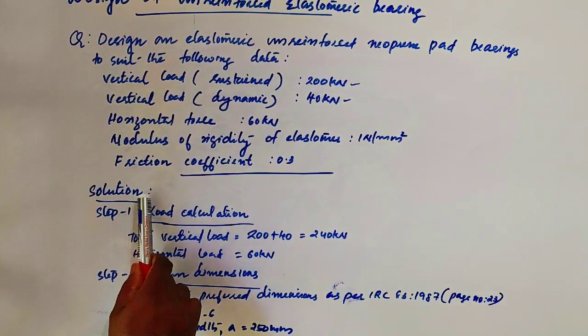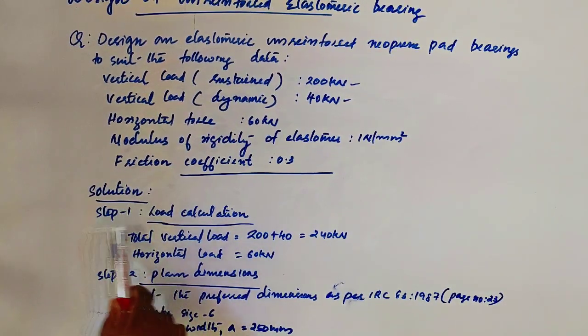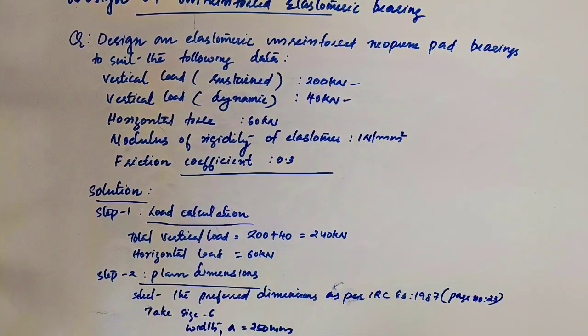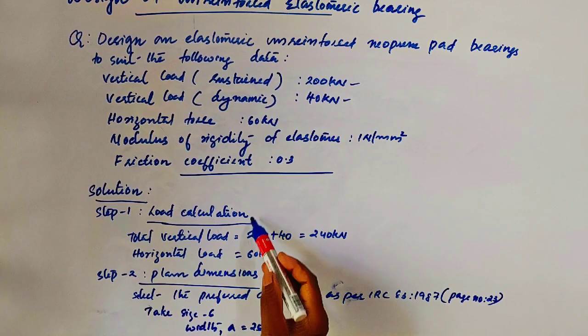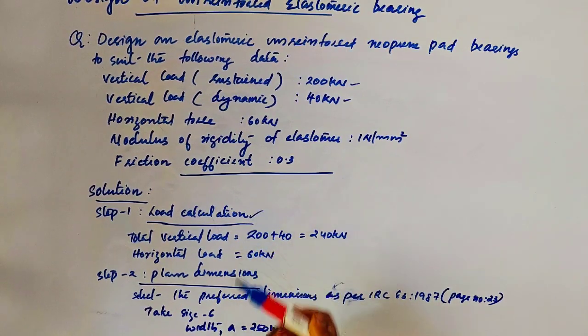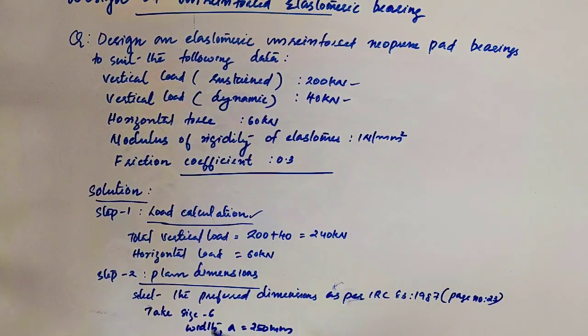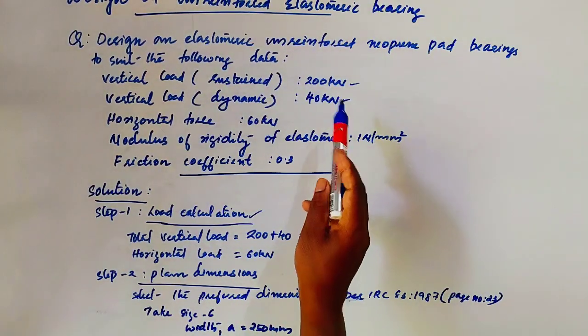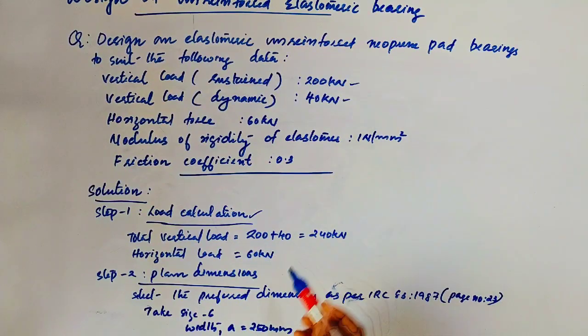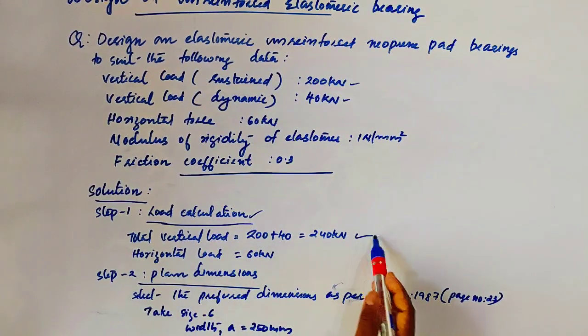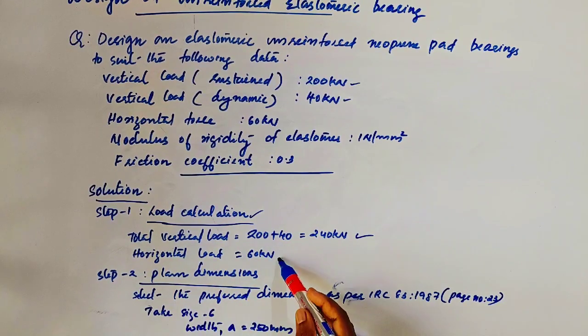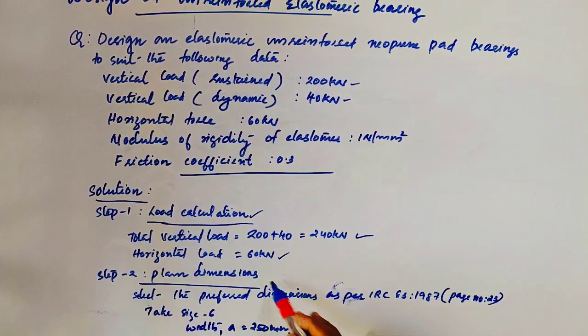Step 1: Load calculation. The total vertical load and horizontal load. Total vertical load means sustained plus dynamic, that is 200 plus 40, it is 240 kN. And the horizontal is 60 kN, that is also given in the question.